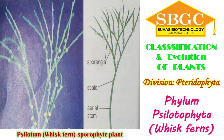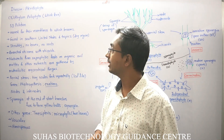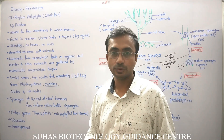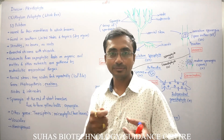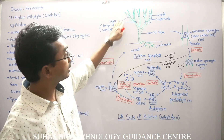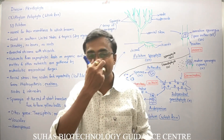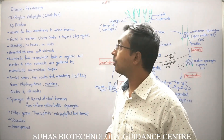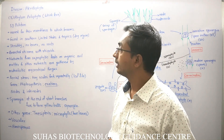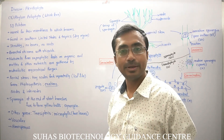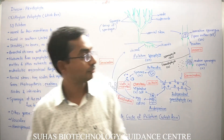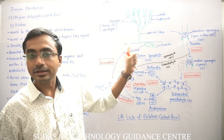The name whisk fern comes from its resemblance to whisk brooms — that one is a plant. You can see the plant here. Many of its characteristics are similar to fern. One of the best known examples is Psilotum, a plant whose life cycle we are going to learn.